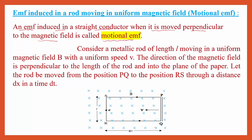Observe this diagram. We are going to consider a metallic rod of length L — this is the metallic rod here, denoted PQ. PQ is a metallic rod having length L, and this rod is moving in a uniform magnetic field B with a uniform speed V. The cross lines indicate the uniform magnetic field going into the plane of the paper. In this uniform magnetic field we have placed the rod PQ.